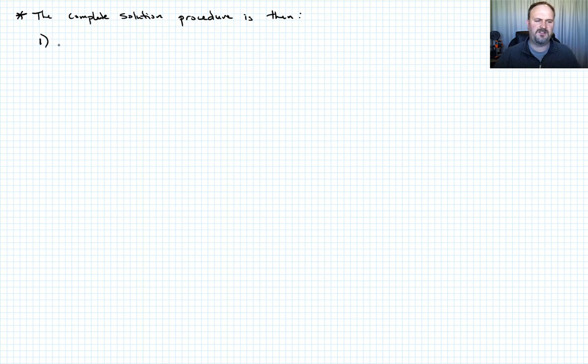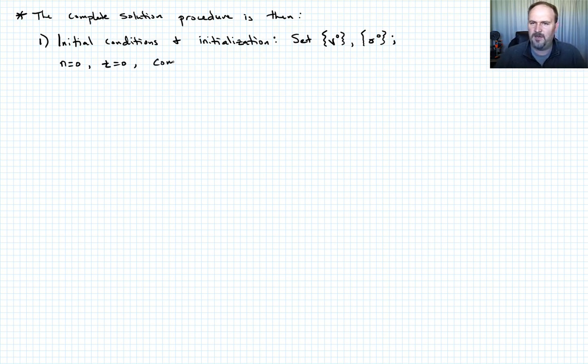The complete solution procedure is then, step one. This is just the initialization, so we have initial conditions and initialization. And so in this case, we'll just set the initial velocity V naught, and we also have some initial stress or force term. Call that sigma naught. And we also have set n equal to 0 and T equal to 0. So those are our initial conditions. The other thing we can do is we can go ahead and compute the mass matrix and M inverse.